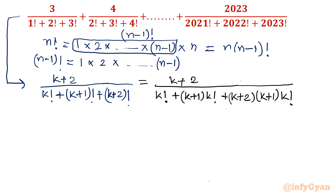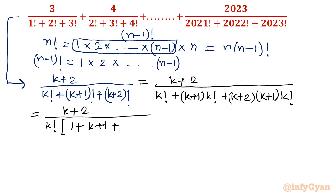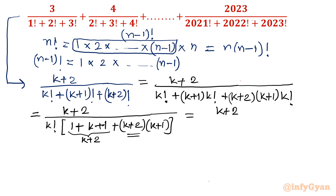Now in the denominator you can see k! is common. So I will take k! as a common factor from the denominator. Let us see what is left. In the bracket I will have 1 + (k+1) + (k+2)(k+1). This is k factorial times that bracket. Now what is this? This is again (k+2), so let me take (k+2) out since it is also available in the numerator.